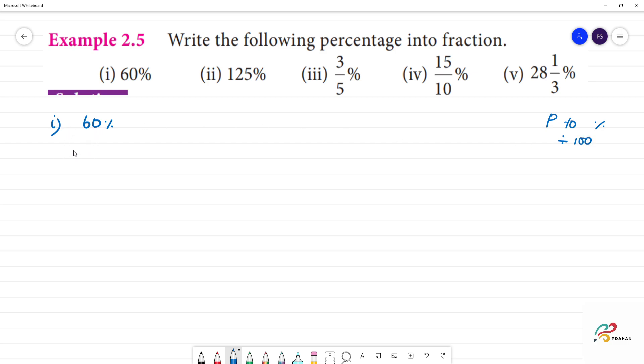60 percentage - 60 divided by 100. 60 divided by 100, zero cancel, 2 cancel. 5, 2s are 10. 3, 2s are 6. So the answer is 3 by 5. Clear.